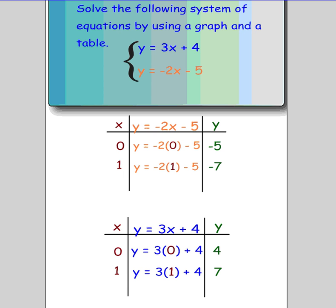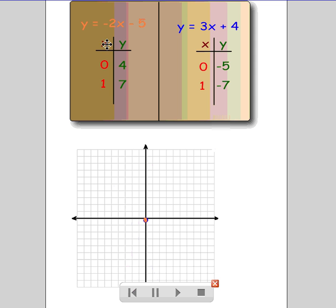And then let's go ahead and we'll jump to the next screen. And what I did is I consolidated the table of values for each. So I got rid of the work, and this is what the table of values would look like for each. y = -2x - 5, you'd have 0, 4, 1, 7. And then for y = 3x + 4, you'd have 0, -5, and 1, -7.